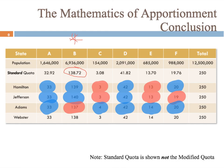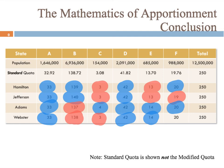Finally, let's look at Webster's method results. State A got 33, so state A went up. State B stayed down, and state C stayed down as well. State D, E, and F all went up. States B and C didn't get to go up a seat, but the good thing about Webster's method is that no one got slighted that badly — there were no upper quota violations or lower quota violations. So this is the one that tends to be more fair than the others. It's not perfect, but it is a little bit better.